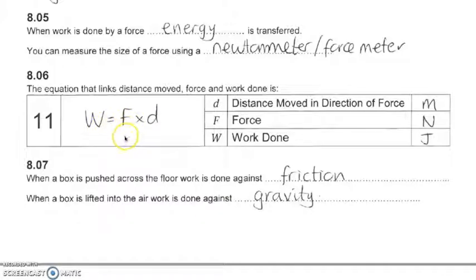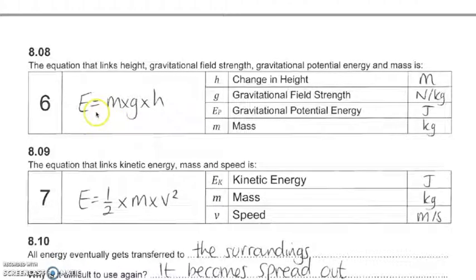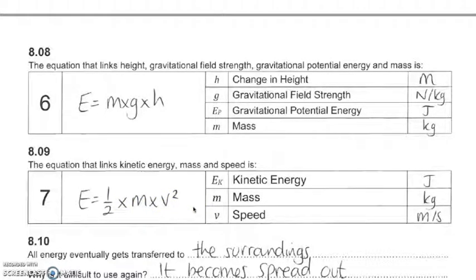For your exam, you need to be able to use and rearrange this equation — draw a triangle with those terms in it. The gravitational potential energy equation is mass times gravitational field strength times vertical height. Kinetic energy is equal to half times mass times speed squared. In your exams, you need to use both these equations, rearranging the terms accordingly depending on what they ask.